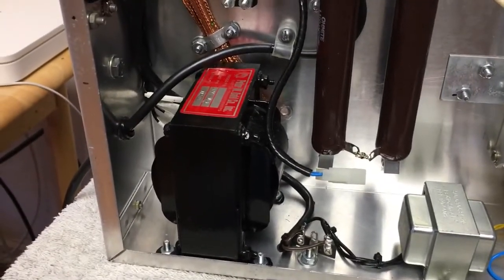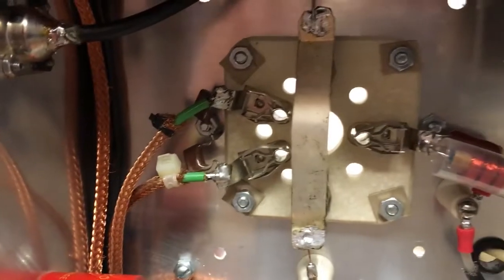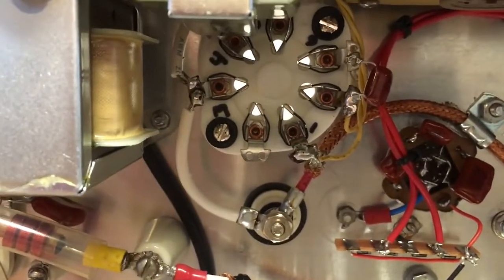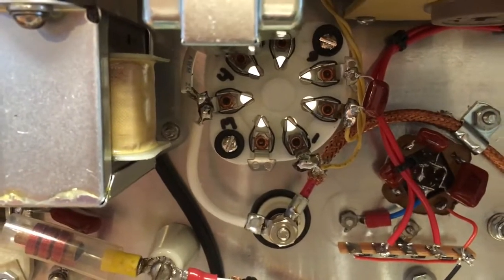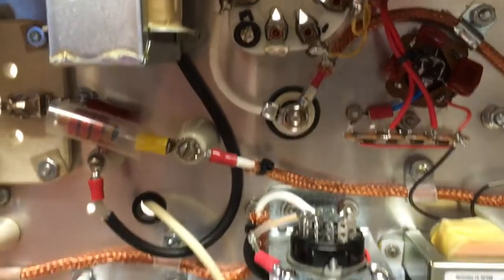There's the 4-400 CG filament transformer that's been there since day one, and there's the connections. I've had that like that forever since I built this thing. The 1625 filament connections are there, and I plugged in the tube and it warms up and I get exactly 12.6 volts on it, which is perfect.